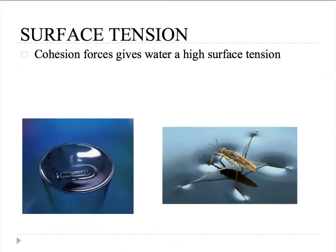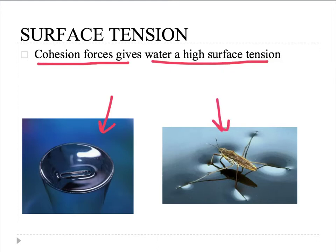Surface tension is caused by cohesion forces, which give water a very high surface tension. We saw this with a paper clip in the water lab, and we also saw the benefits for organisms in nature — especially insects, which are able to walk on or land on the water's surface.